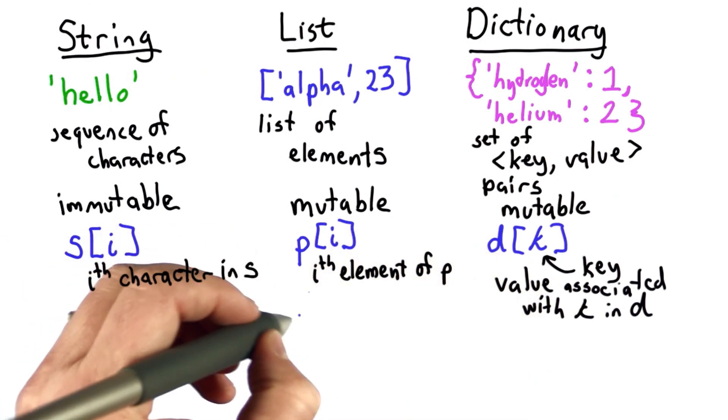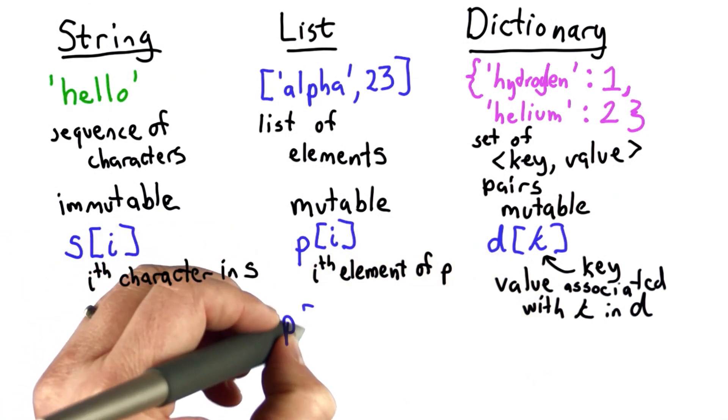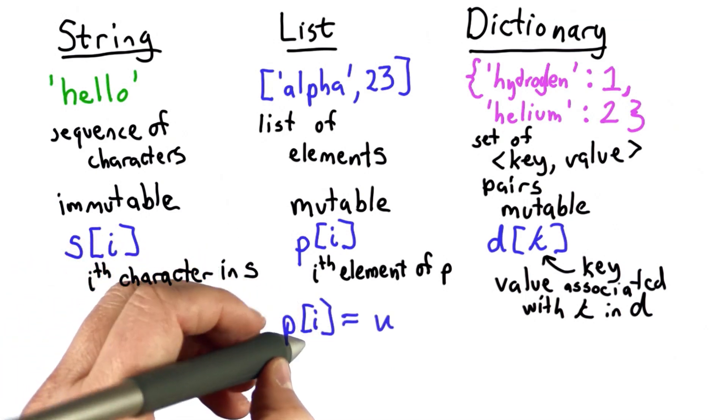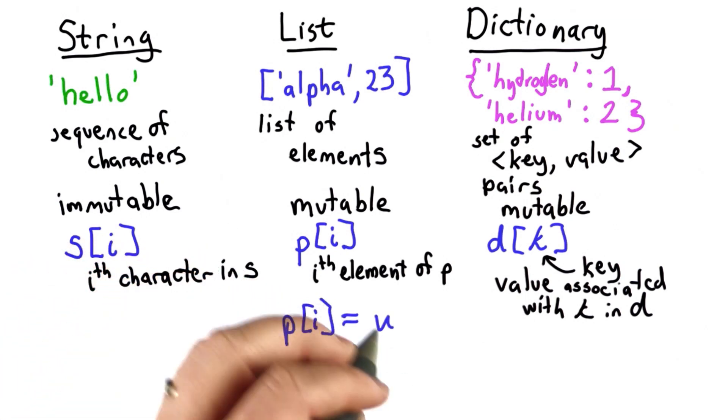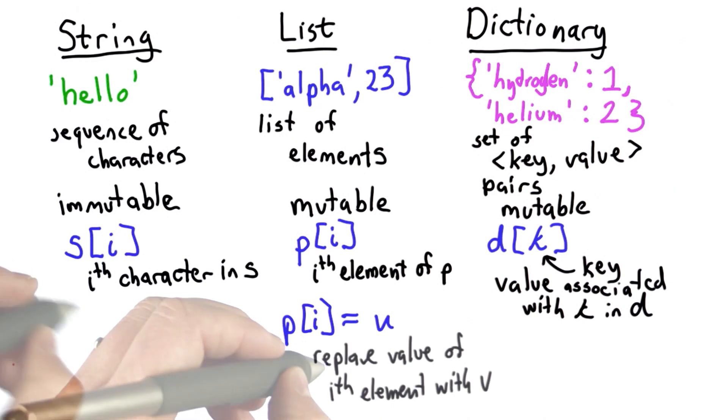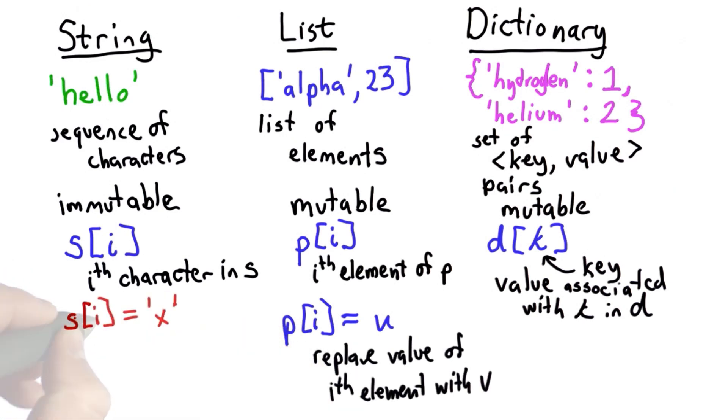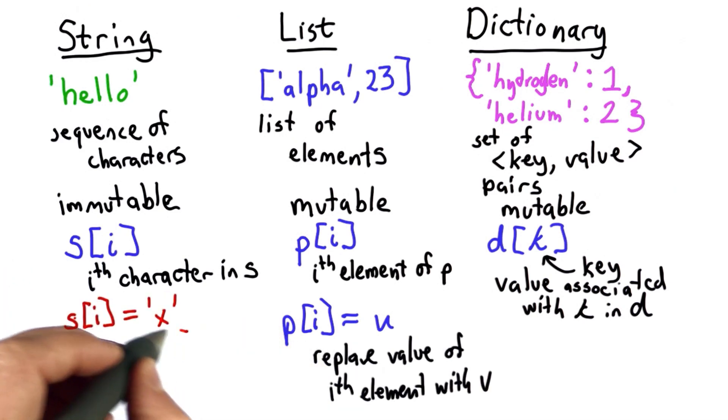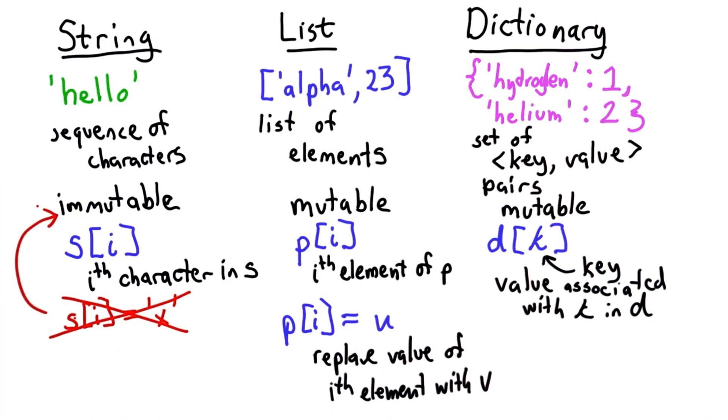We can also use our indexing in assignments. We saw with a list, we could do this. That would replace the value of the i-th element of p with whatever we have here. With a string, we can't do that. That produces an error. And the reason we can't do it is because strings are immutable. So there's no way to modify characters in a string.